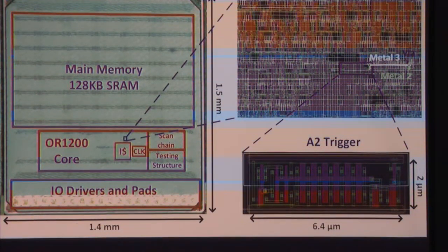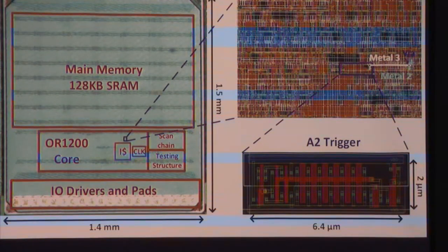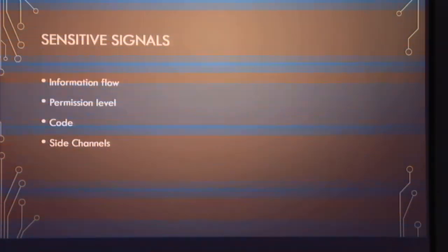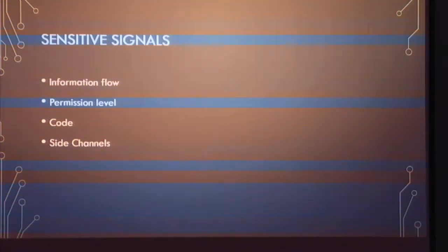My framework focuses mostly on scenarios where somebody added a single chip to your device. It's conceptually possible it might also work for something more complex, but that won't be as easy. My methodology for looking for malicious hardware implants mostly begins with sensitive signals. I define sensitive signals as anywhere you have some kind of valuable information flow, a permissions level or control check, code itself, or any side channels available to your attacker.